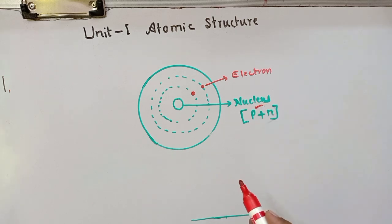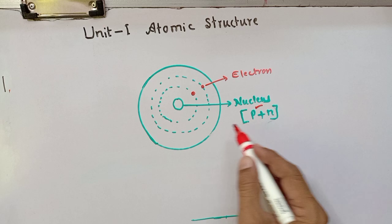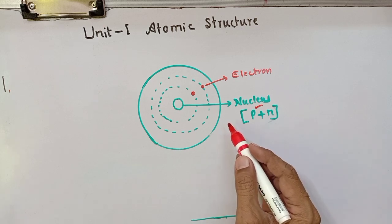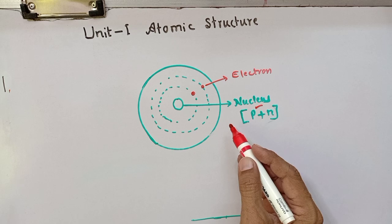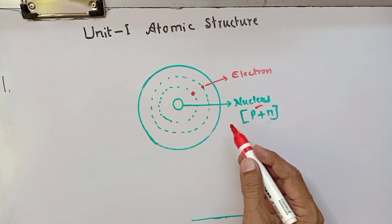As the number of protons in the nucleus increases, the number of neutrons required to give stability increases at a faster rate. Elements with atomic number up to 20 mostly contain equal numbers of protons and neutrons. After that, the number of neutrons present is found to be more than the number of protons.